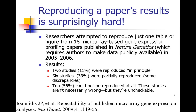Nature Genetics requires authors of that type of paper to make the data publicly available. So they went through these 18 papers and really worked very hard to try to reproduce a table or a figure. They were only able to do it, even though all the data were available, for two studies — just 11%.